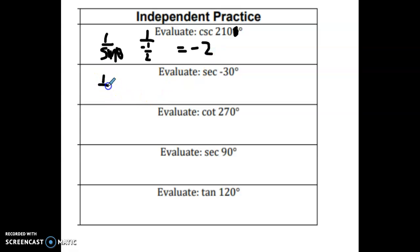The secant is 1 over the cosine. So I find negative 30, which is the same as positive 330. Its coordinates are square root of 3 over 2 and negative 1 half. I want the cosine, which is square root of 3 over 2, but I want the inverse of that. So I want 1 over the square root of 3 over 2, which is 2 over square root of 3, which then if we rationalize the denominator, we end up with 2 square root of 3 over 3.